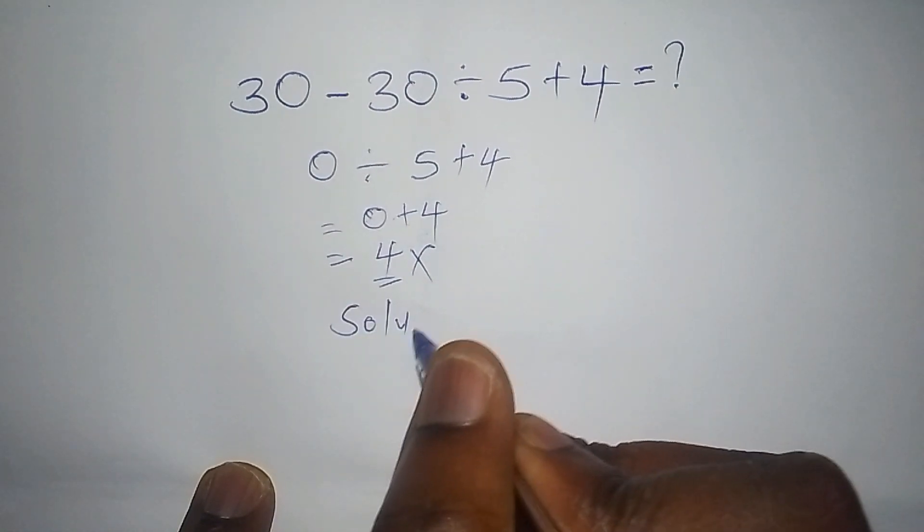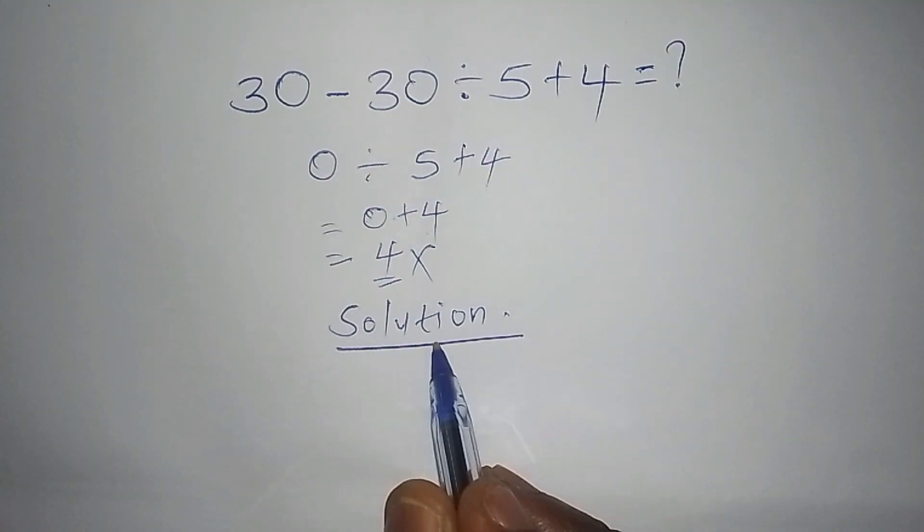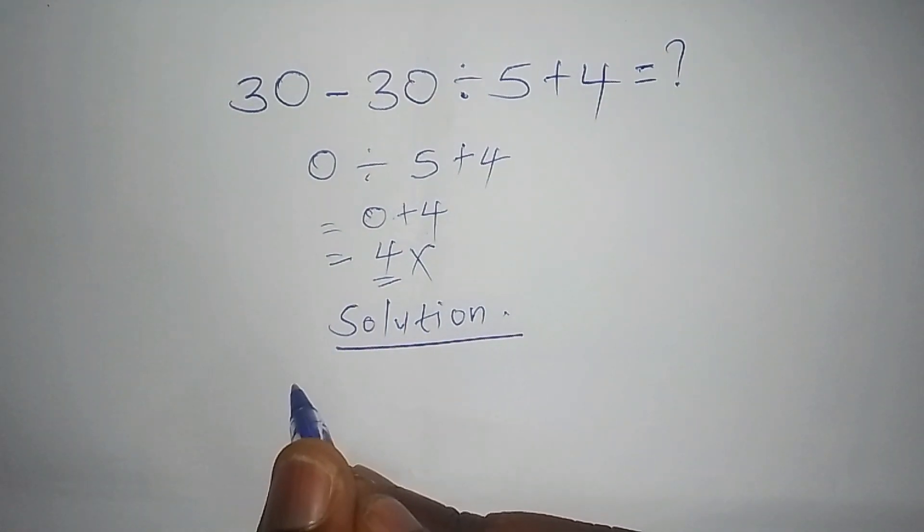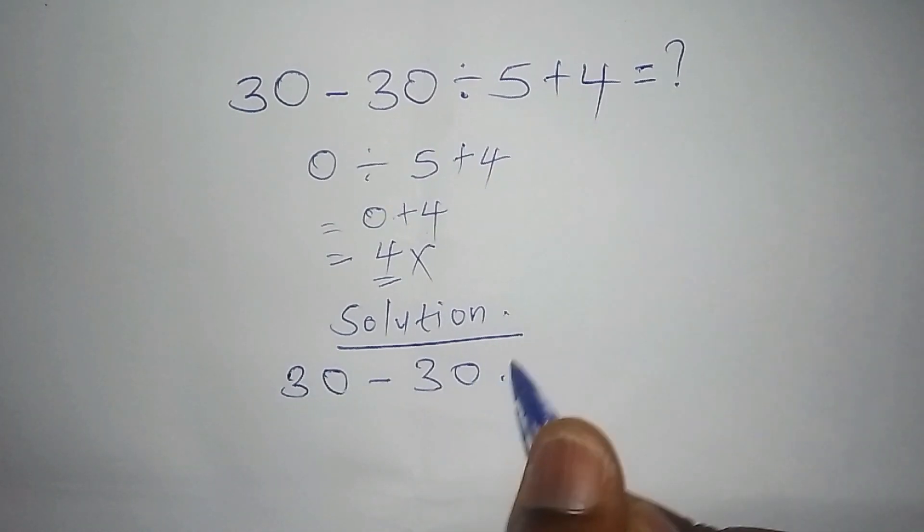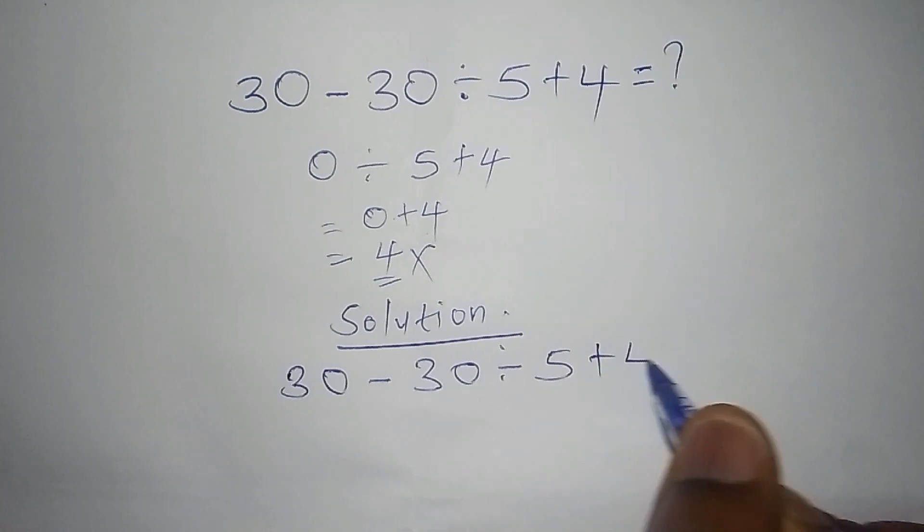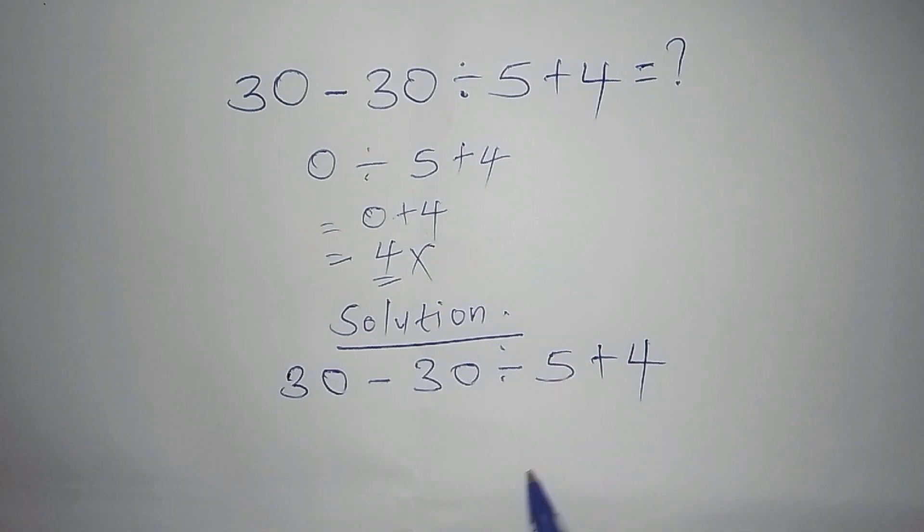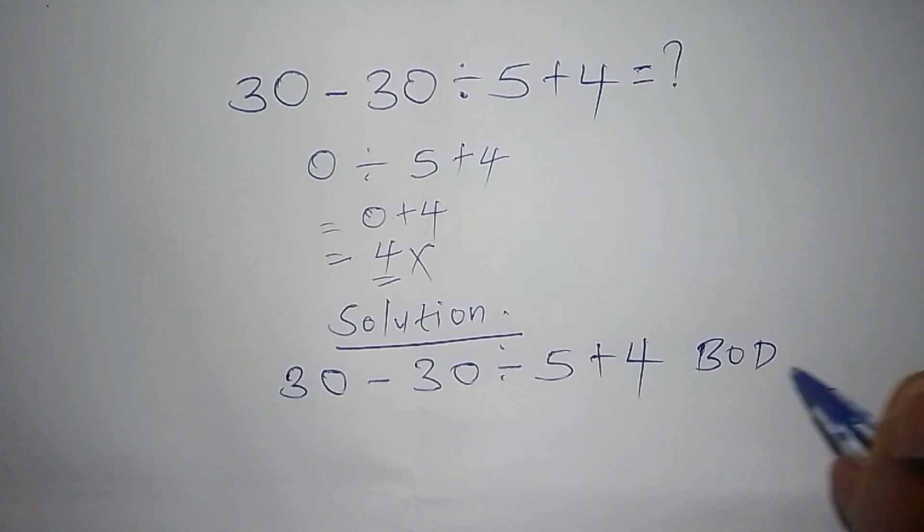So let's begin with the first one, solution. We want to work out the math problem, that is 30 subtract 30, then divide by 5, then add 4. So, before you work out this problem, there is something that you want to introduce, and you want to introduce something that is called the BODMAS.